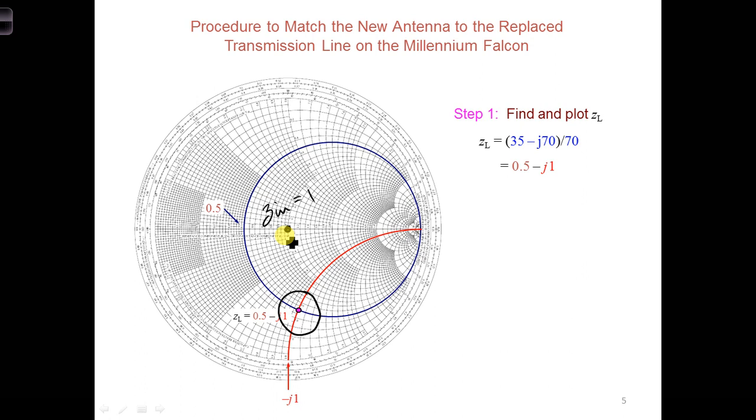But as we move along the transmission line away from the load towards the generator, where does the normalized load impedance move? Well, as we're moving towards the generator, we're spinning around the middle of the Smith chart and we never actually get there. We just keep spinning around and around the further we go down the transmission line.